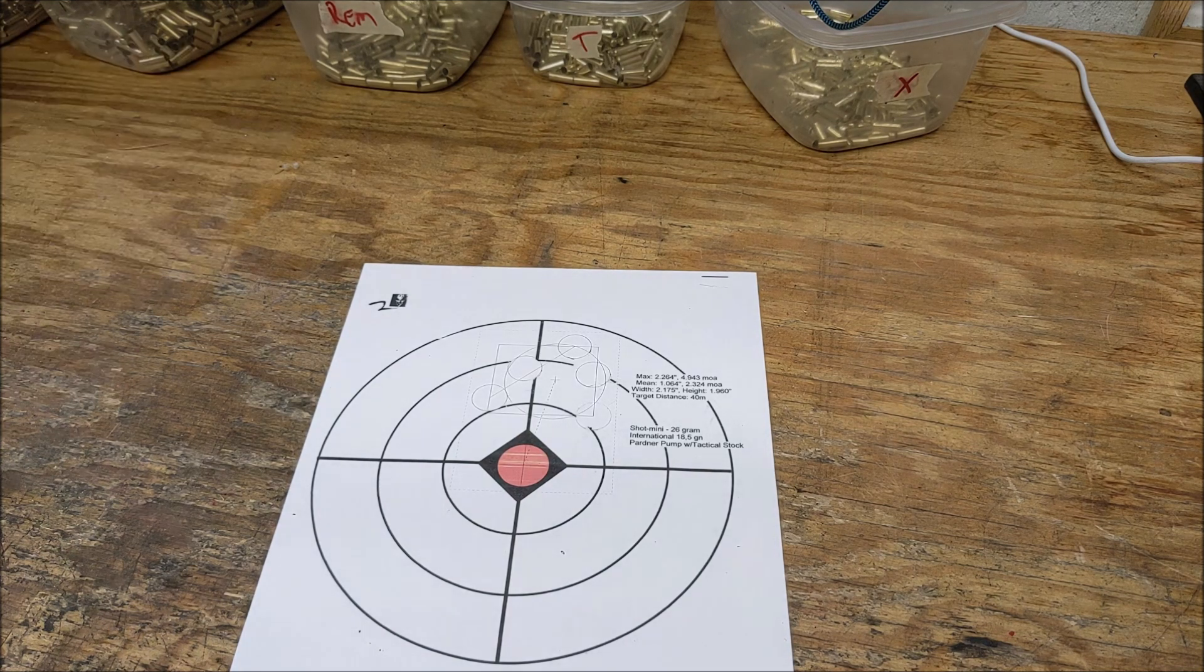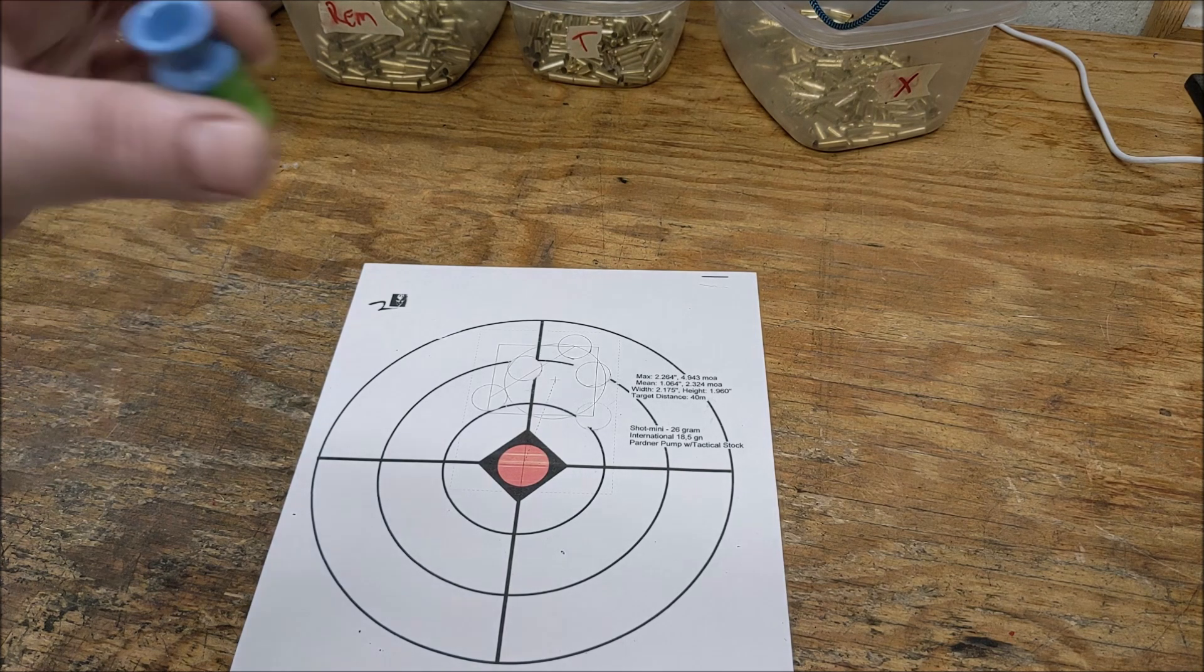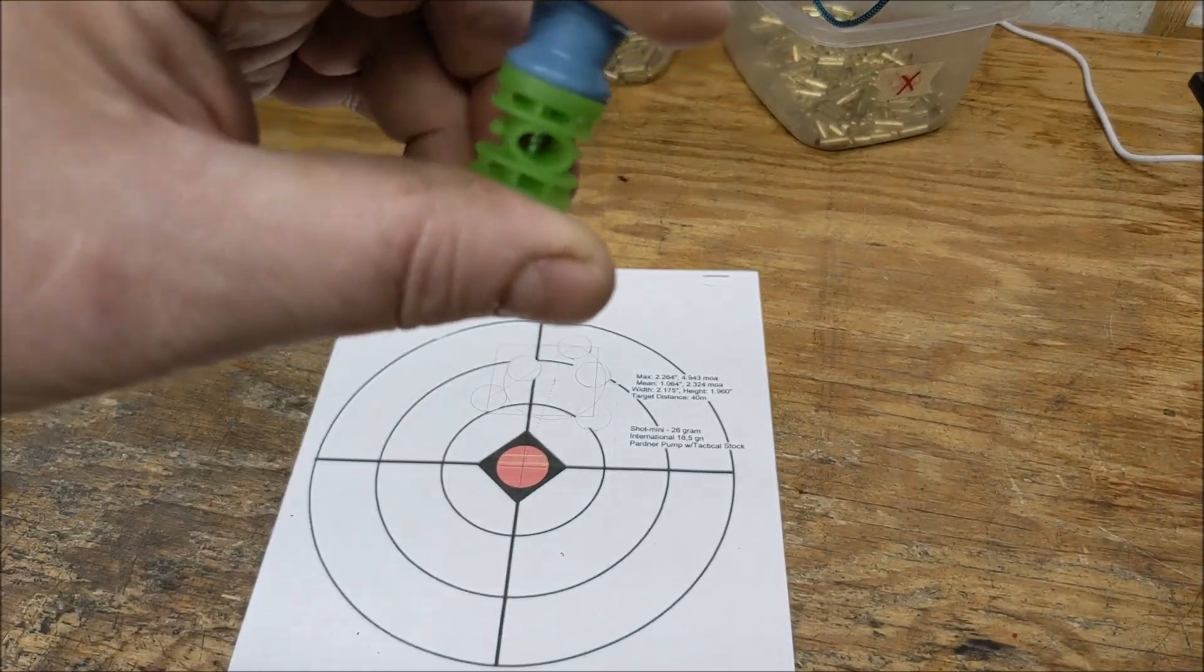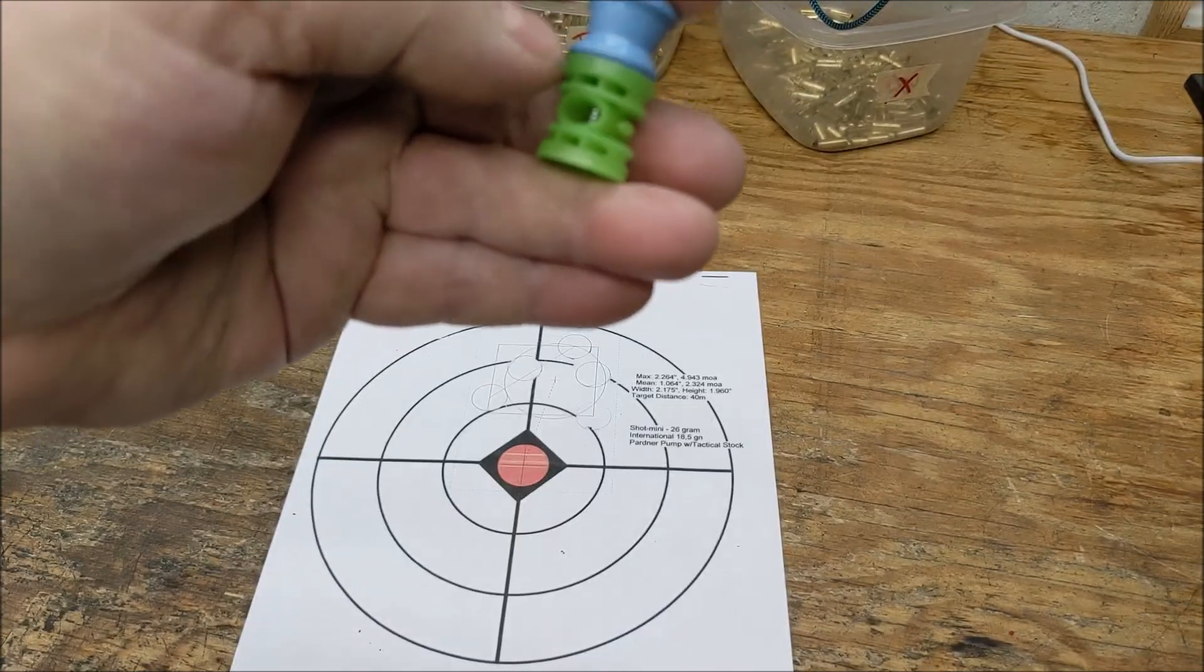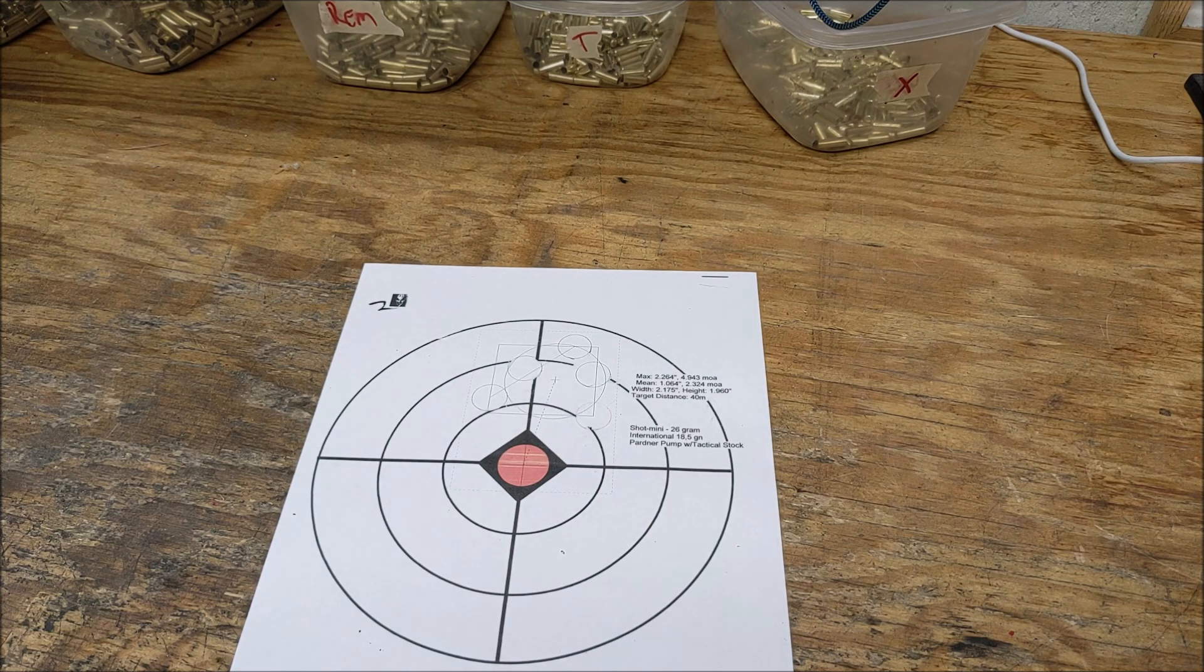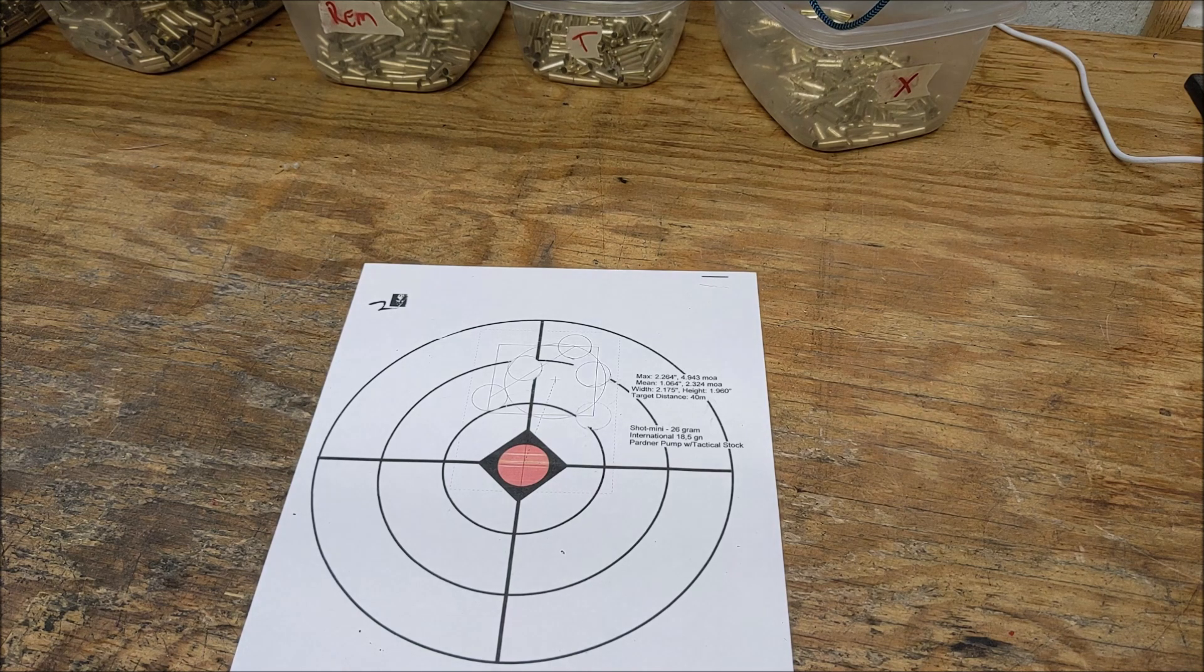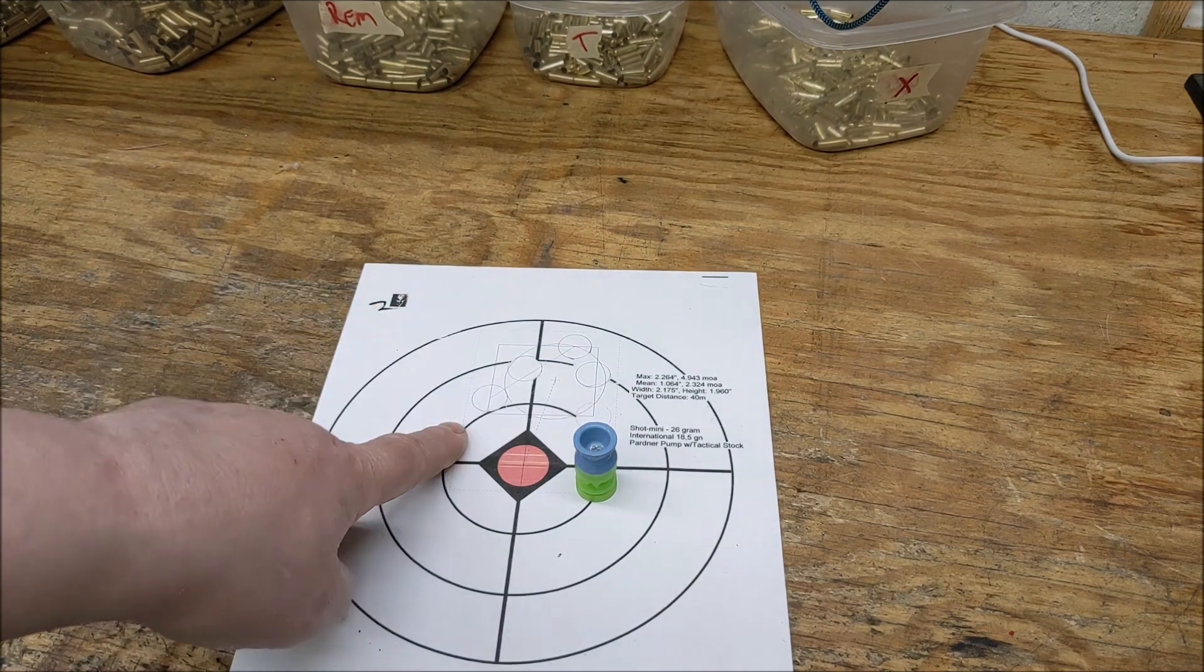What this is about is 26 gram shot minis, assembled three-quarter inch number four wood screw, green wad. This particular example powder coated weighs 426.7 grains, so 27.65 grams assembled. This is at 40 meters.